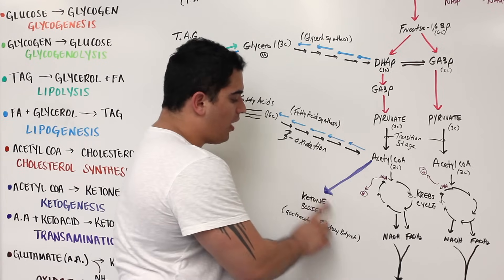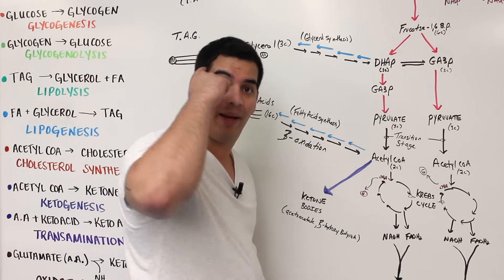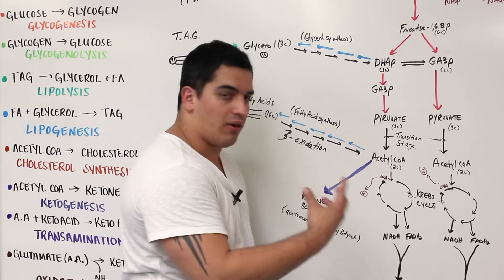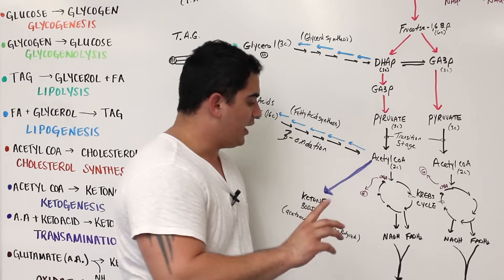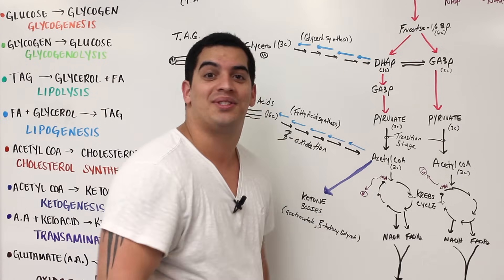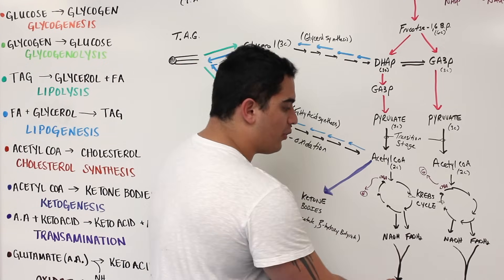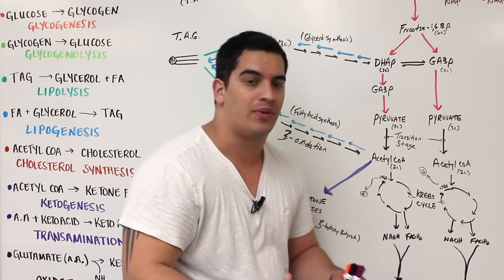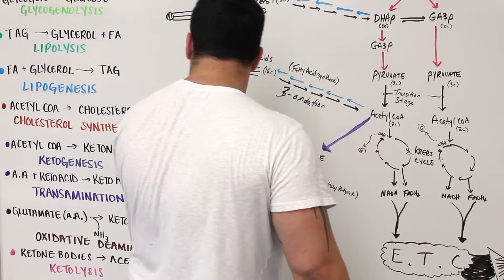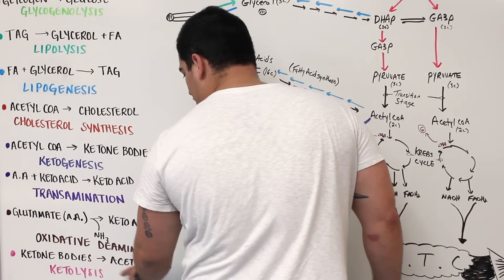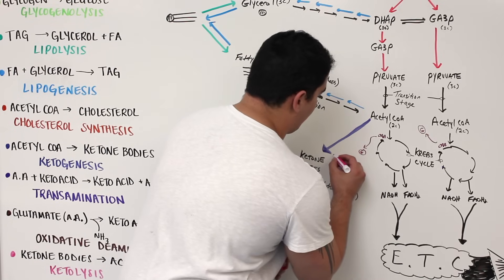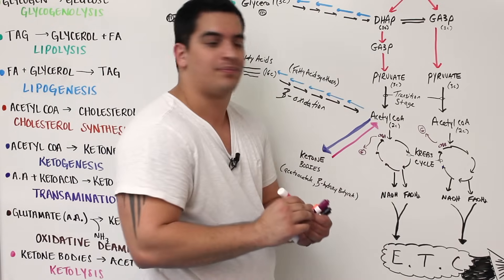The ketone bodies produced include acetoacetate and beta-hydroxybutyrate. These are used by the brain, skeletal muscle tissue, and cardiac muscle tissue during starvation, diabetes mellitus, or whenever the body needs them. To utilize the ketone bodies for energy, we break them back down into acetyl-CoA, which then goes through the Krebs cycle to generate energy. Going from ketone bodies back to acetyl-CoA is called ketolysis.